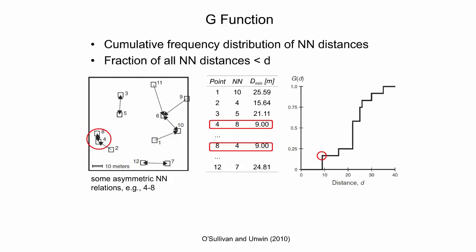Since points 4 and 8 are the nearest neighbor of each other, they share the same nearest-neighbor distance as shown in the table. These two points also have the shortest neighbor distance among all points in the pattern. Since 2 out of 12 is the proportion of 16.7%, the g-function at a distance of 9 meters has the value of 0.167. The next nearest-neighbor distance is 15.64 meters for event 2. Since 3 out of 12 is the proportion of 0.25, the next point plotted in the g-function is at a distance of 15.64 meters with a value of 0.25.